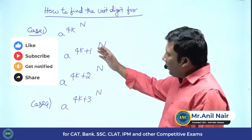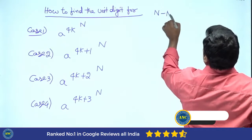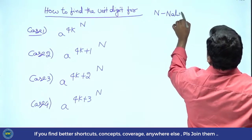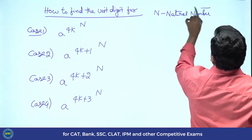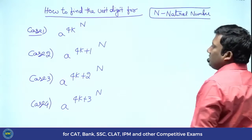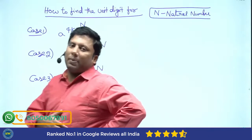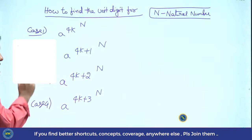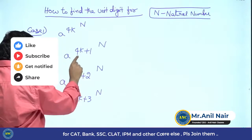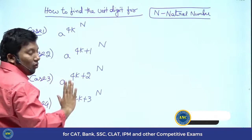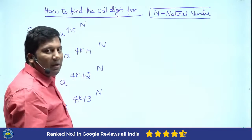Case number 4 is when it is divided by 4, it gives a remainder 3. What will happen if there are power to a power? N is a natural number. A power 4k, A power 4k plus 1, A power 4k plus 2 — when you divide a number by 4, only these 4 remainders will come: 0, 1, 2, and 3.